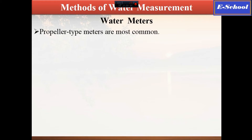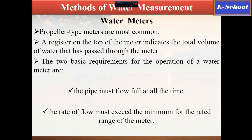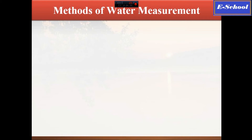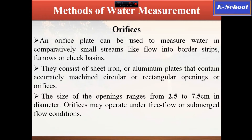Another way of measuring water is through water meters. The pipe must flow full at all times — this is the basic requirement for the operation of this water meter. Additionally, the rate of flow must exceed the minimum for the rated range of the meter. This is the typical diagram of the propeller-type meter; you can pause the video and read it from the slide.